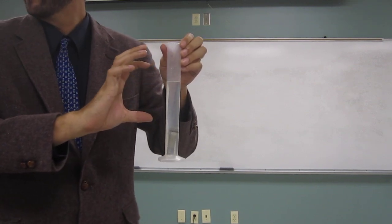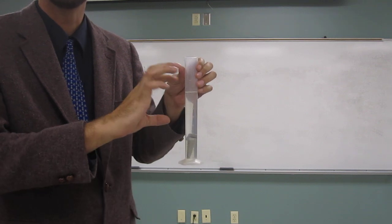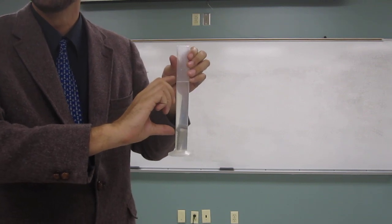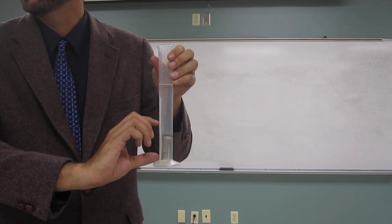It increased, right? It increased, right? Okay, so the combined volume is going to be the volume of the water plus the volume of that irregularly shaped object. Is everybody okay with that?